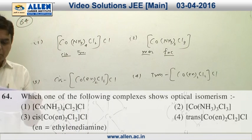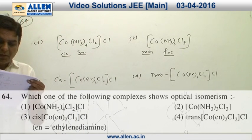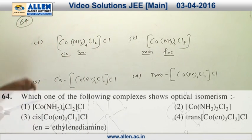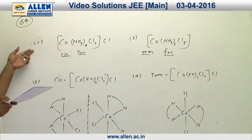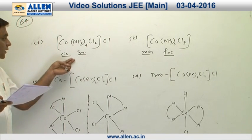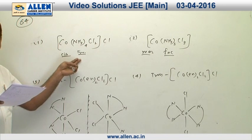Question 64 is about complexes showing optical isomerism. Complex one exists in two geometrical forms, both cis and trans. Both cis and trans forms are optically inactive.